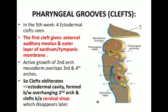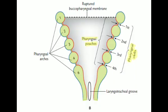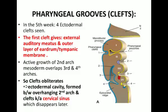Now coming to the pharyngeal clefts or the pharyngeal groove first. The first pharyngeal cleft forms the external auditory meatus and also forms the outer layer of the tympanic membrane. This is the first pharyngeal cleft — the outer part will form the external auditory meatus and the inner part will form the tympanic membrane.